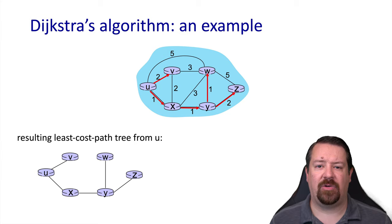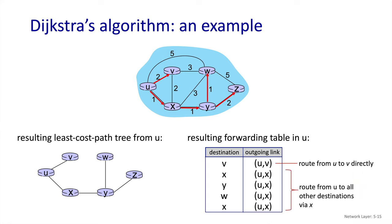u can then generate its forwarding table, where it uses the link u-v to get traffic to v directly, and it uses the link u-x to get traffic to the rest of the network. Keep in mind that this process was run on u and it only generated the forwarding table for u — it didn't generate forwarding tables for any other nodes. Every node in the network needs to run Dijkstra's algorithm for itself.